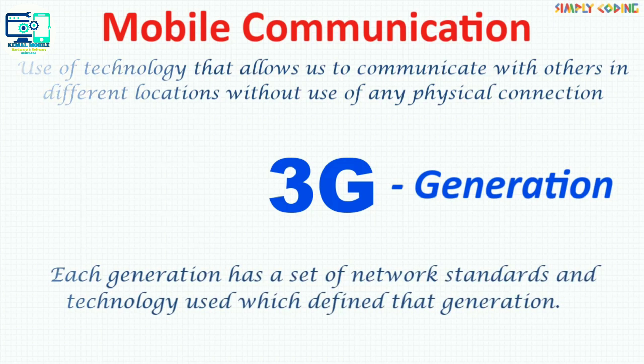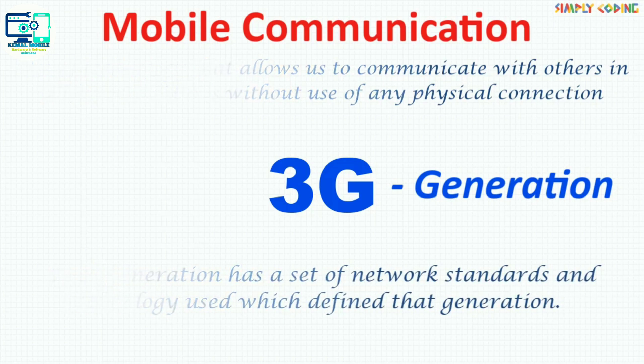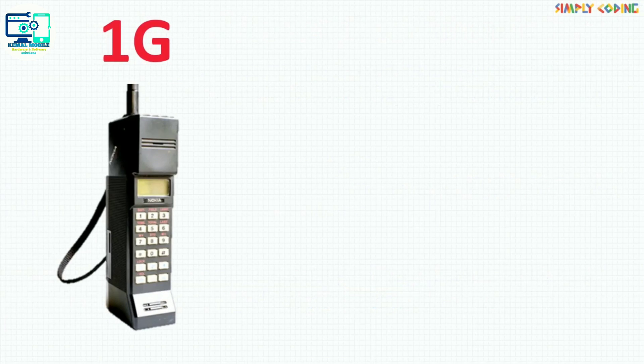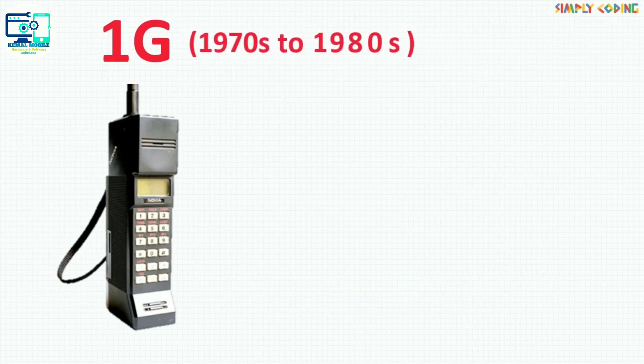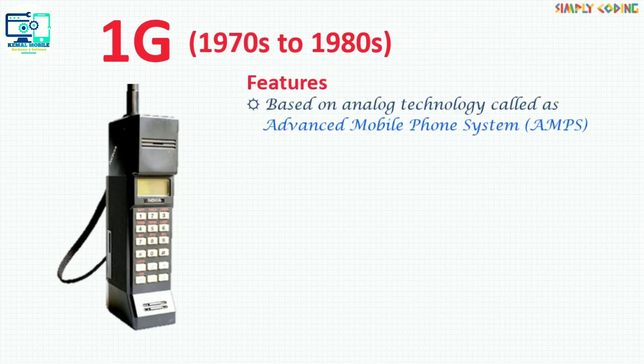Let's look at each generation one by one. The first generation introduced mobile phones between the 1970s and 1980s. It was based on analog technology called the Advanced Mobile Phone System, or AMPS.